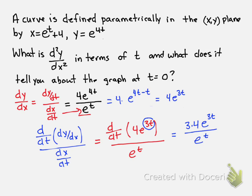3 times 4 is 12, and 3t minus t gives us 2t, so this is our second derivative: d²y/dx² = 12e^(2t).